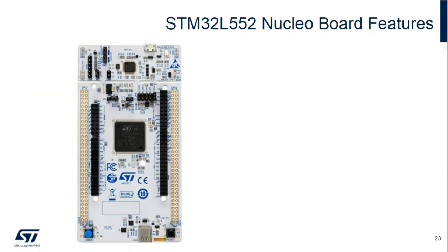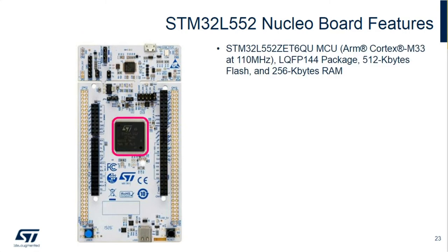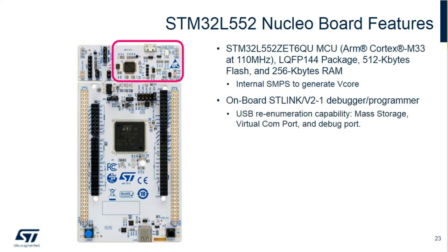We will be using the L5 Nucleo board. It consists of an STM32 L552 with the dash-Q option, which includes 512K of flash, 256K of SRAM, and internal support for a switch-mode power supply on the board — so the power performance is really good. There's a built-in ST-Link v2, which allows us to connect to our PC, serves as the debugger for the IDE, and as the download interface for the Cube Programmer.